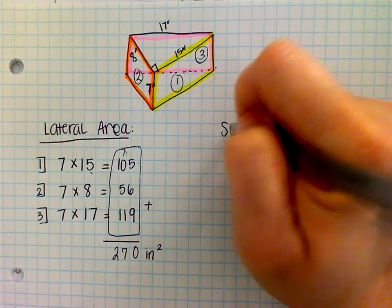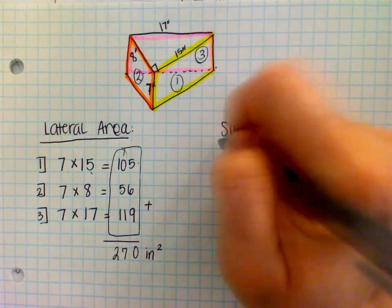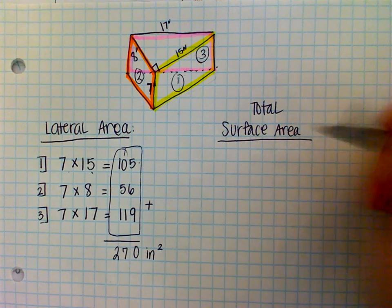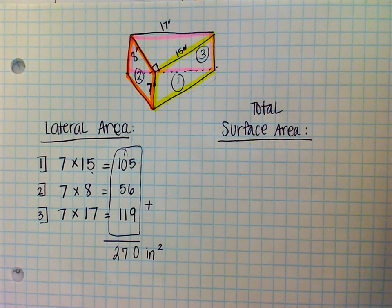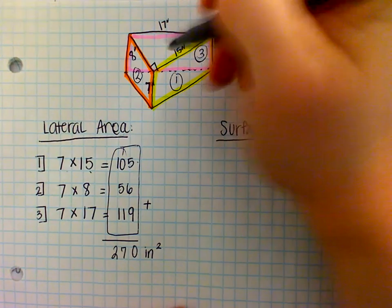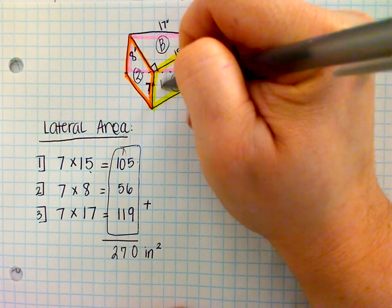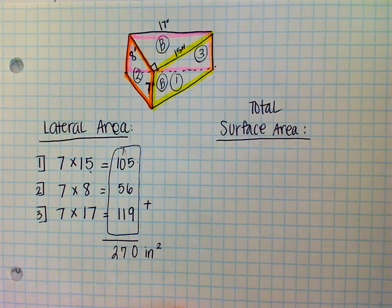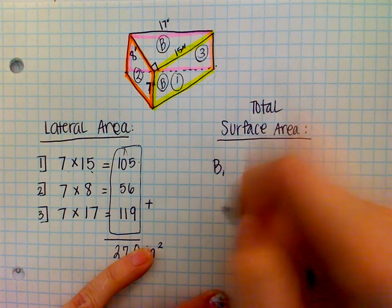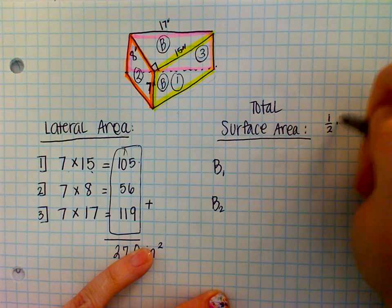Now, what do we need to do in order to find the surface area, the total surface area? What else, what other information do we need to find or determine? Julia? The area of the bases. The area of the bases. So, the area of the bases, we have base one and base two. What shape are our bases, Asia? They're triangles. So, the area formula is one half times base times height.